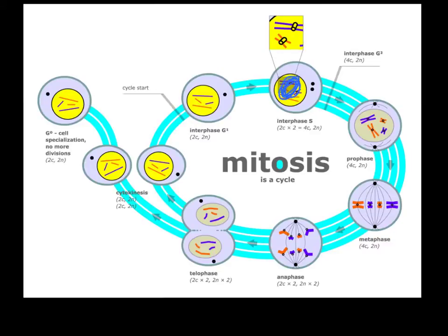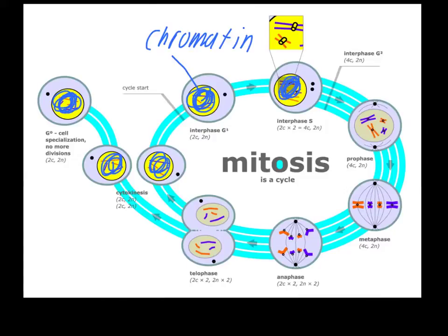So remember, in these stages the DNA is referred to as chromatin, and you can't actually see the individual chromosomes, not until you get to prophase. So in all of these stages here, you wouldn't actually be able to see the chromosomes.